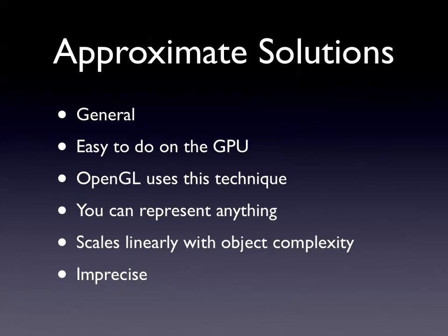The number of triangles scales basically linearly with complexity. Something like a lanyard you could represent with two triangles, something like a human maybe 20,000 polygons - at that point you'd want a third-party application rather than hard-coding it. Parametric solutions scale exponentially - going from a sphere to a rectangle involves branching and operations you don't want on a GPU.